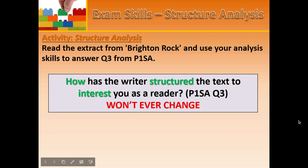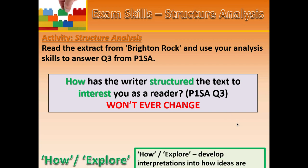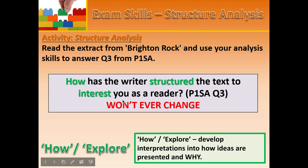We're going to have a look at the extract from Brighton Rock and use the analysis skills we've just picked up. Feel free to pause and rewind as you annotate. The question is: how has the writer structured the text to interest you as a reader? This is AQA Paper 1, Section A, Question 3 — and we can say with certainty the question won't change, as it has been consistent since the exams began.